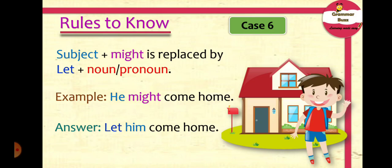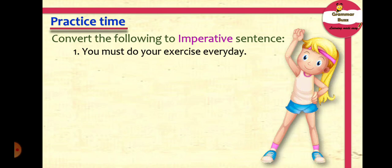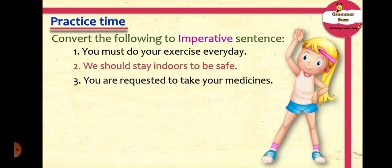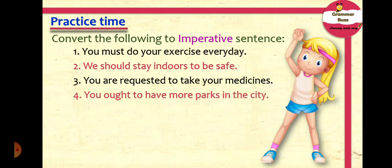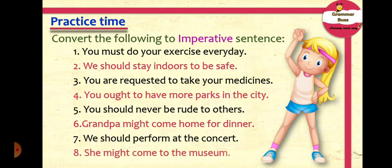Now that we have understood all the cases well enough to convert an assertive to an imperative sentence, let us practice a few. Convert the following to imperative sentences: 'You must do your exercise every day'; 'We should stay indoors to be safe'; 'You are requested to take your medicines'; 'You ought to have more parks in the city'; 'You should never be rude to others'; 'Grandpa might come home for dinner'; 'We should perform at the concert'; 'She might come to the museum.' Pause the video to complete the exercise and then get back to check the answers.